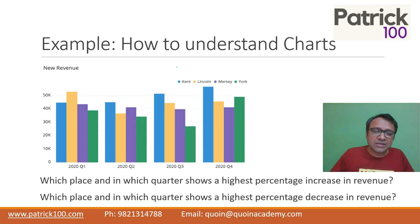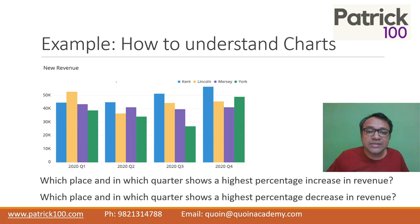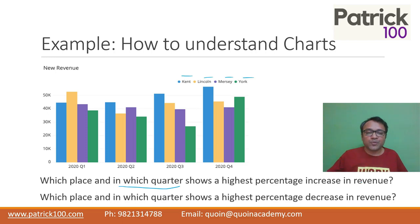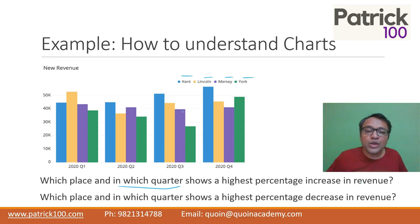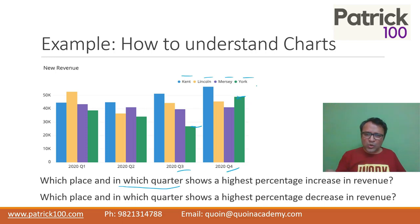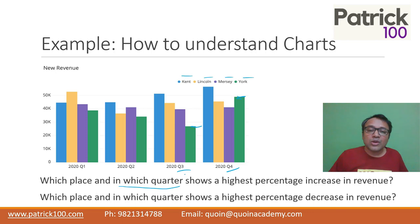Let's try to understand how to read charts. I'm given a simple bar chart. The question is: which place — Kent, Lincoln, or York — and in which quarter shows the highest percentage increase in revenue? Looking at the data, I can clearly make out that York from quarter three to quarter four in 2000 has almost doubled. So automatically you can see that York Q4 will be the answer, because it doubled during that particular period.